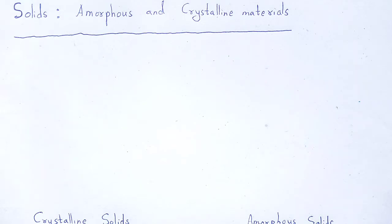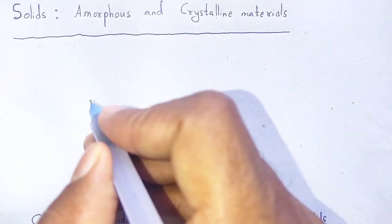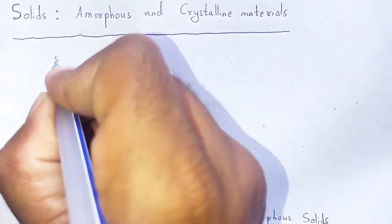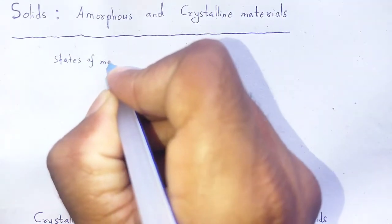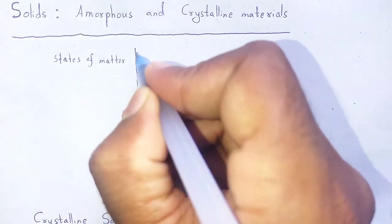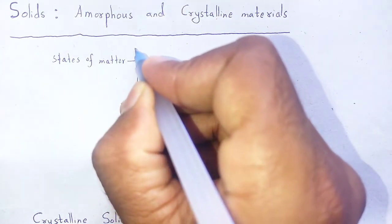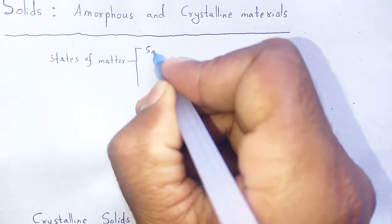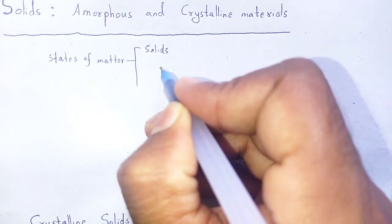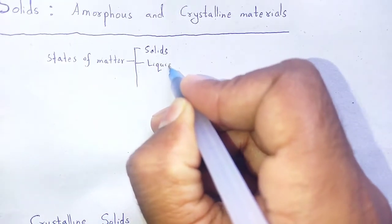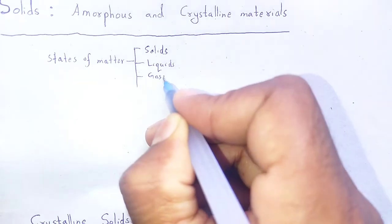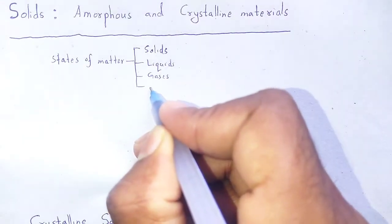In general, there are four states or phases of matter. States of matter are classified as solids, liquids, gases and plasma.